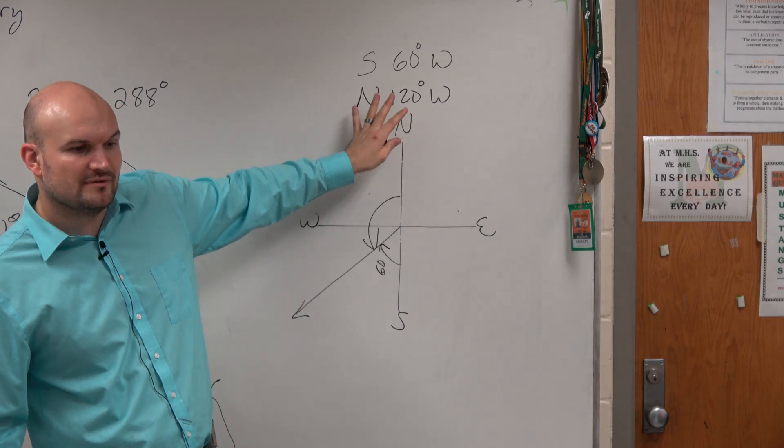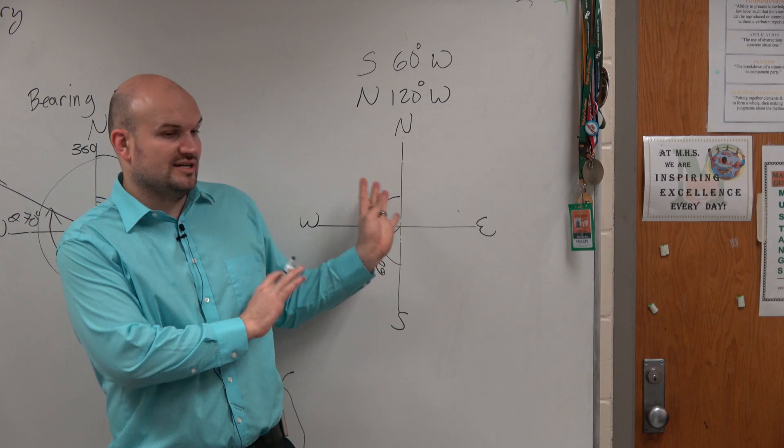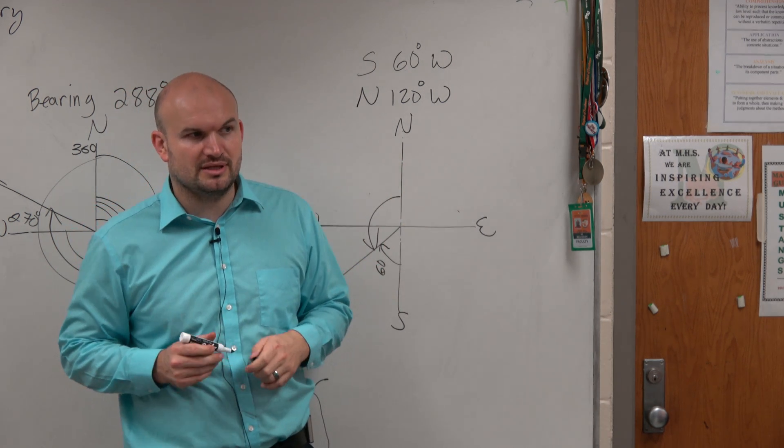We're basically just using the positive value. Whereas the standard form, negative and direction is matters, bearings really, it's not so much. Don't use really the negative form.